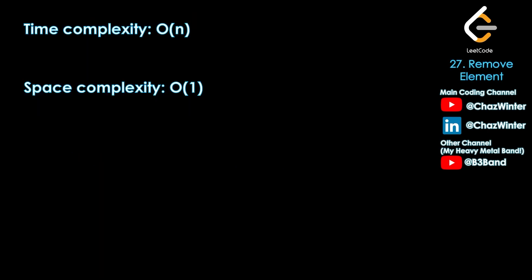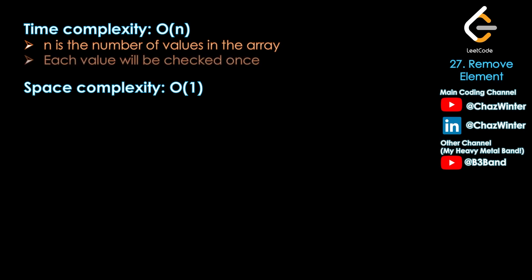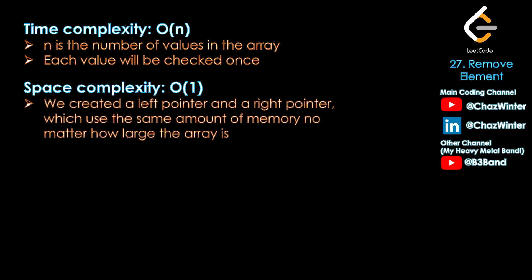Now let's go over the time and space complexity of this problem. The time complexity is going to be O(n), where n is the number of values in the array, because each value ends up being checked once. The space complexity is O(1) — constant space — because we created a left pointer and a right pointer, and those two pointers use the same amount of memory no matter how large the array is. No additional memory is needed to solve this problem.